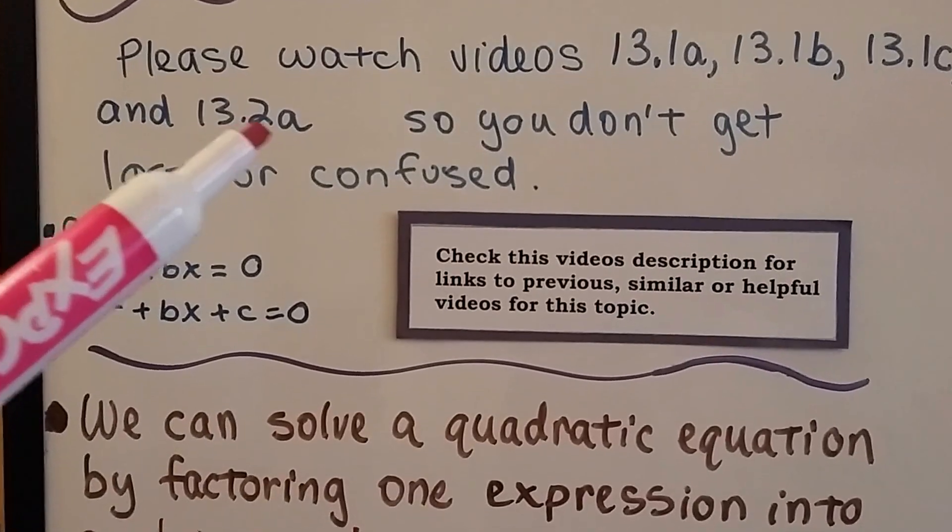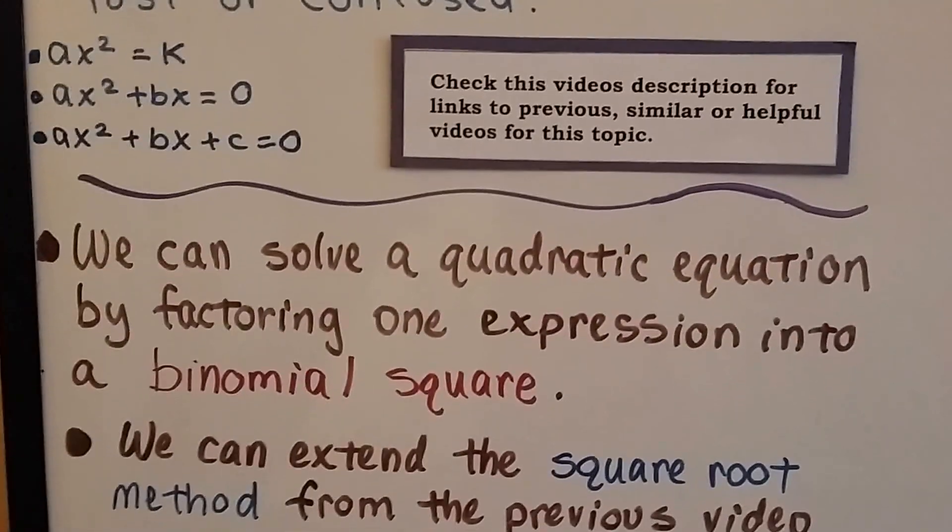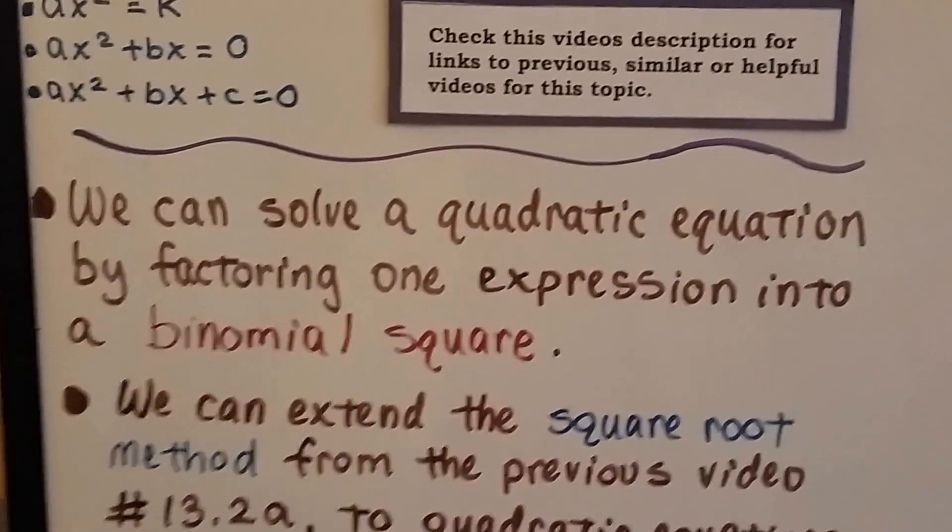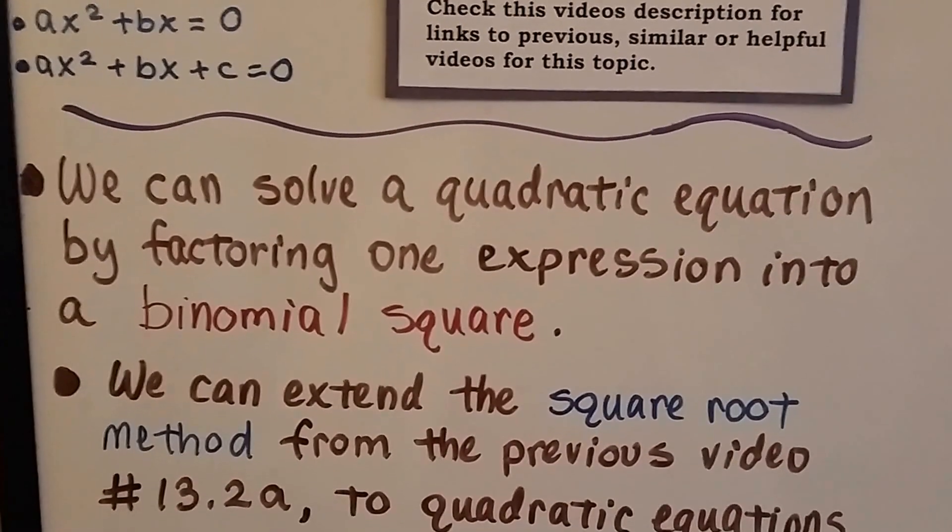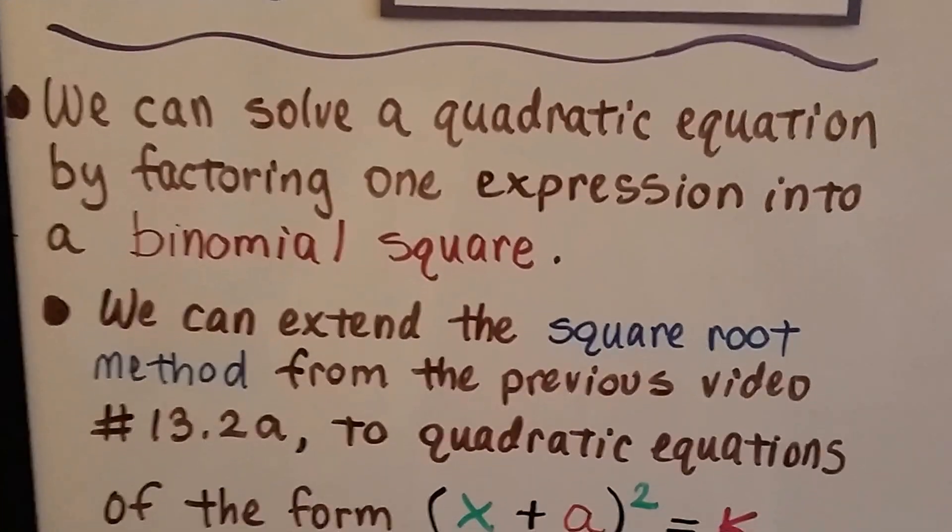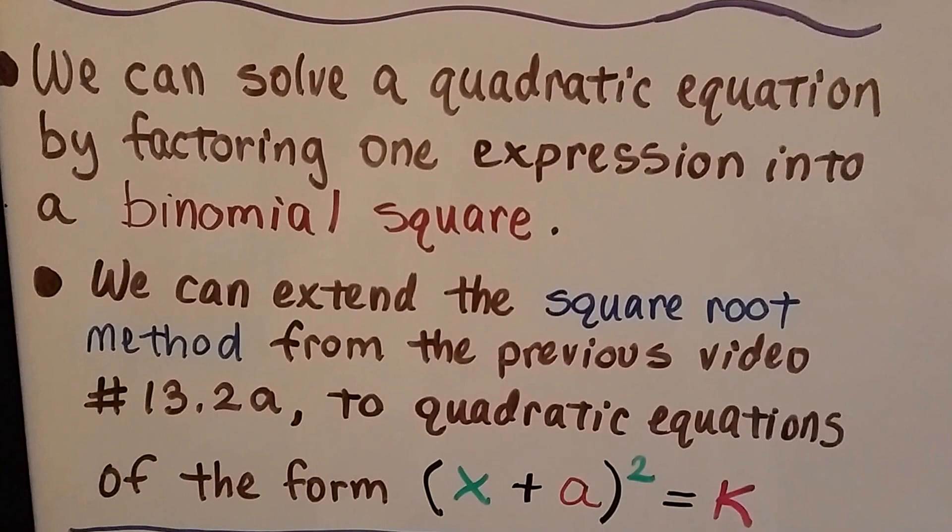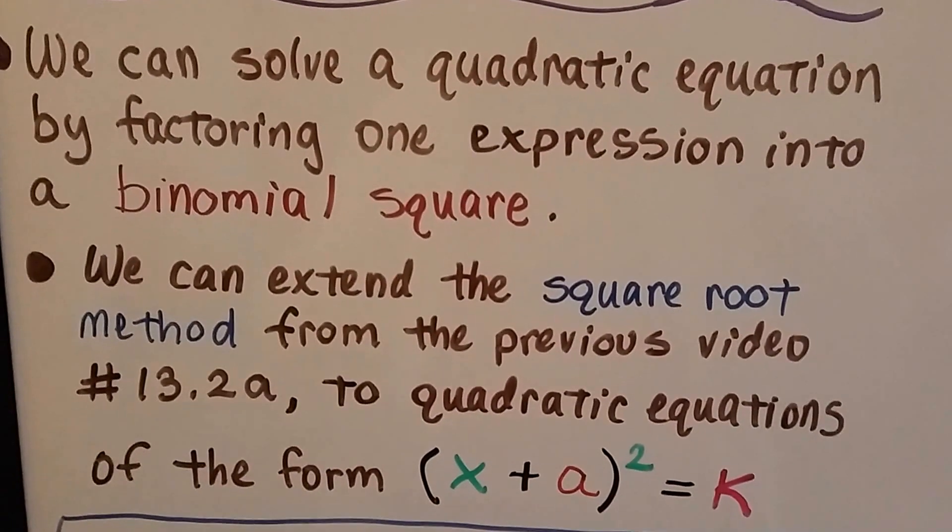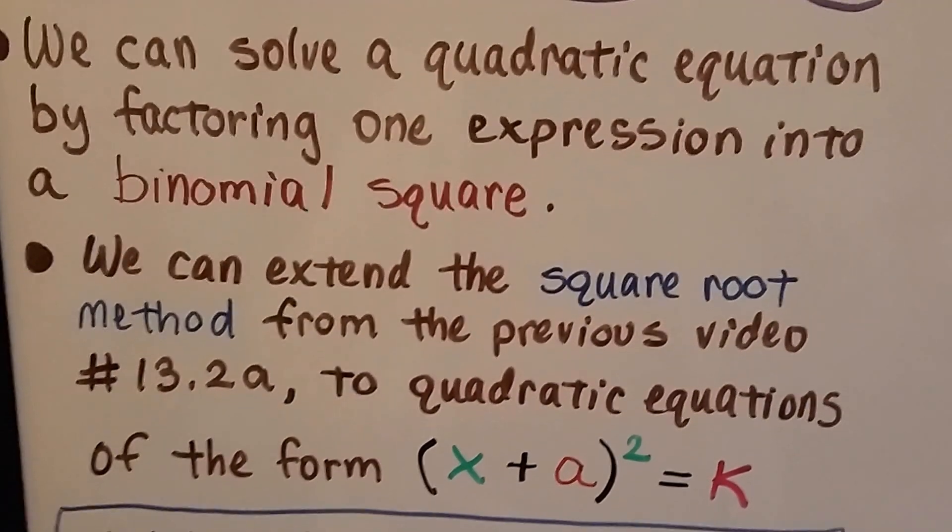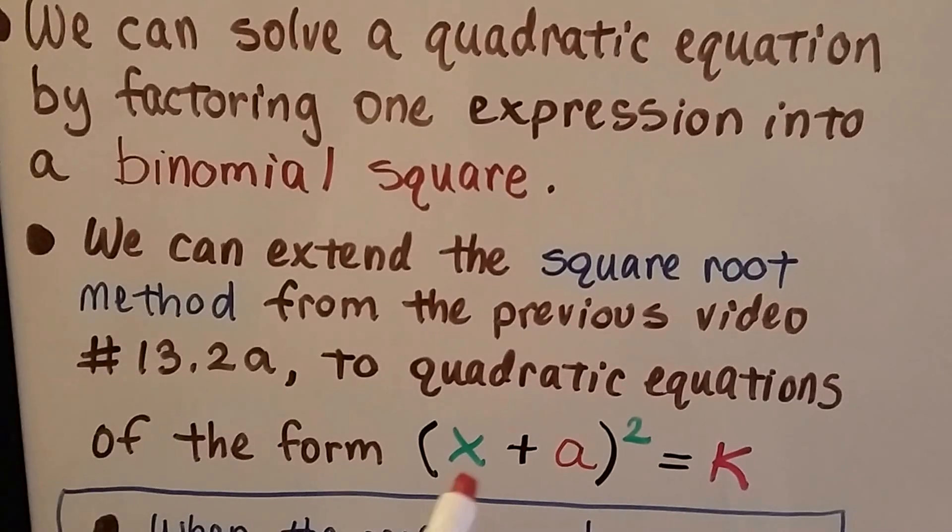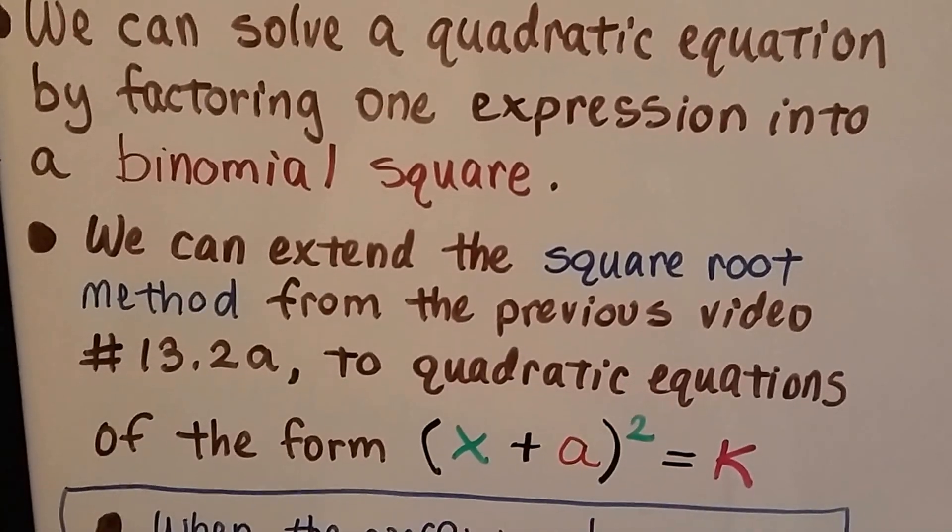But this one is very important, 13.2a. So, we can solve a quadratic equation by factoring one expression into a binomial square. And we can extend the square root method from the previous video, 13.2a, that's why I wanted you to watch it, to quadratic equations of the form x plus a squared equals k.